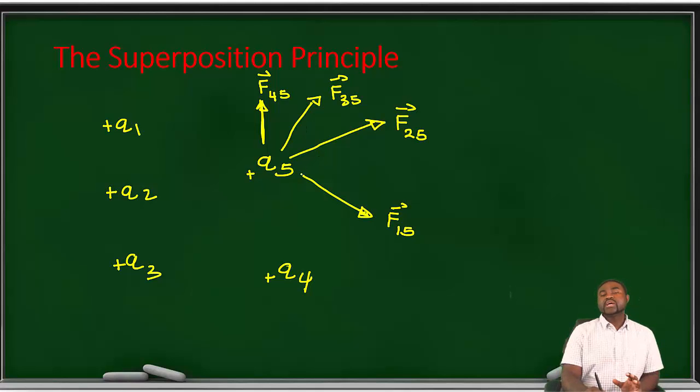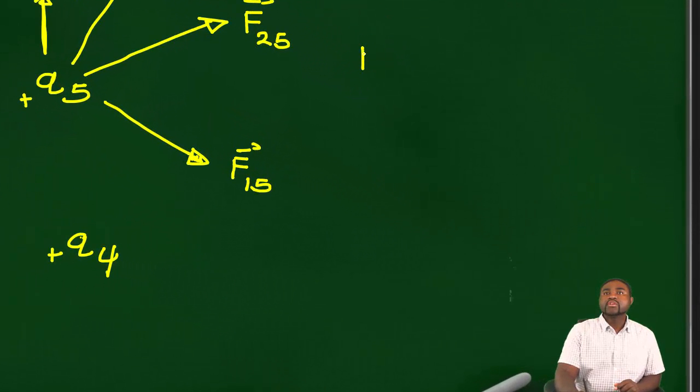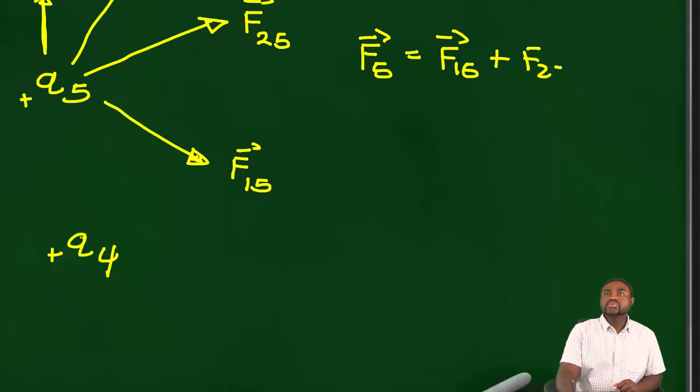So you've got to realize that the resultant force acting on Q5 is just the sum of the forces due to the individual charges.